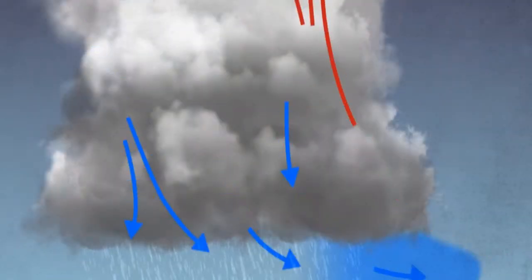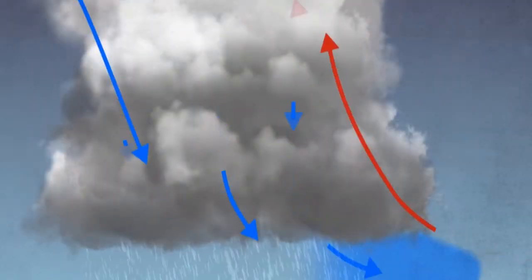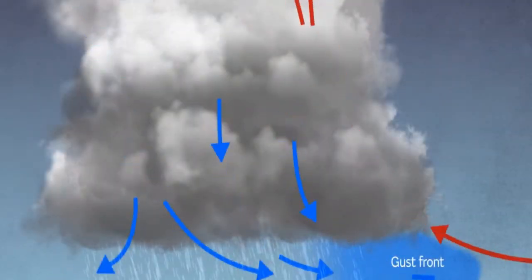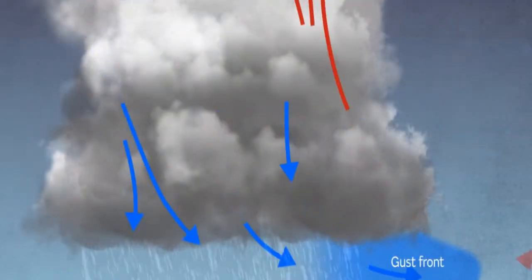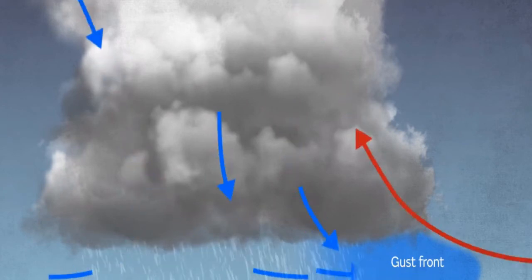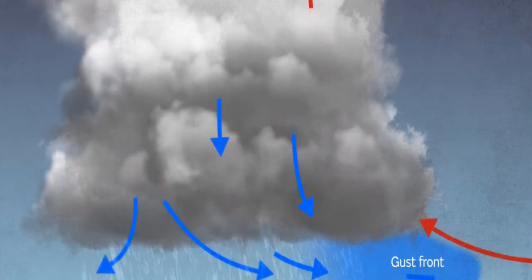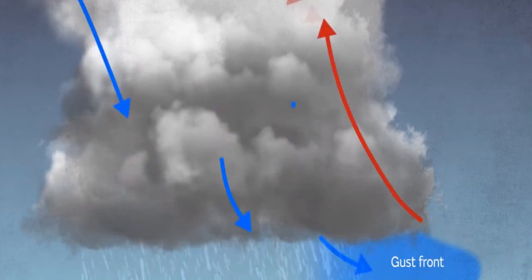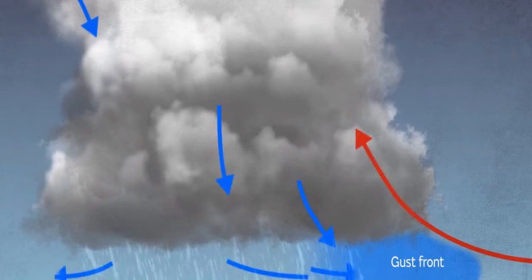Cumulonimbus clouds that form in a continuous line are non-frontal bands of thunderstorms, or squall lines. A wind gust during a thunderstorm can be over 120 miles per hour.